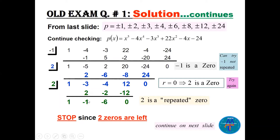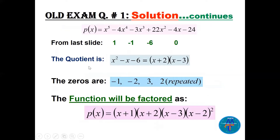We try x=2 again: bring 1 down, 1 times 2 is 2, add to get -1, then -2, until the remainder is 0 — so x=2 is a repeated zero. We have degree 5 and have found 3 zeros so far: x=-1 and x=2 (repeated). Taking the quotient 1, -1, -6 and factoring gives (x+2)(x-3). So all zeros are x=-1, -2, 3, and 2 (repeated). The factored form is (x+1)(x+2)(x-3)(x-2)².